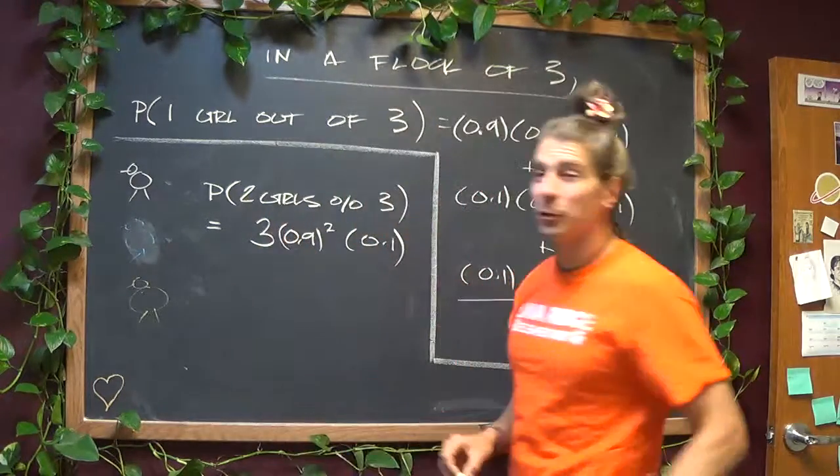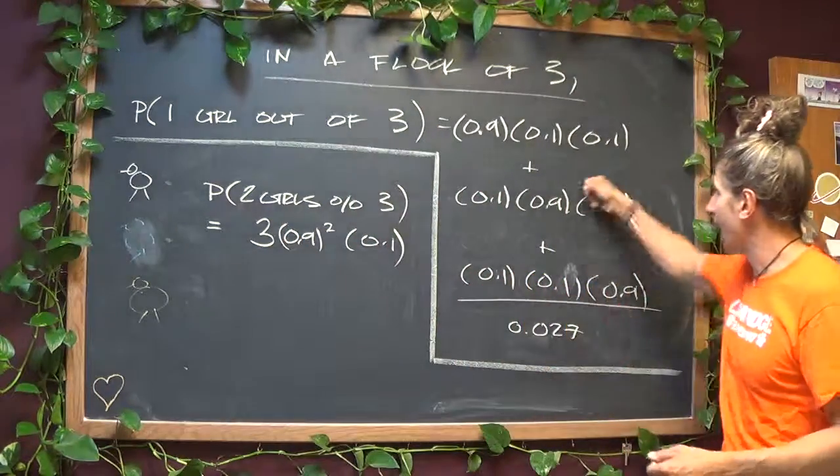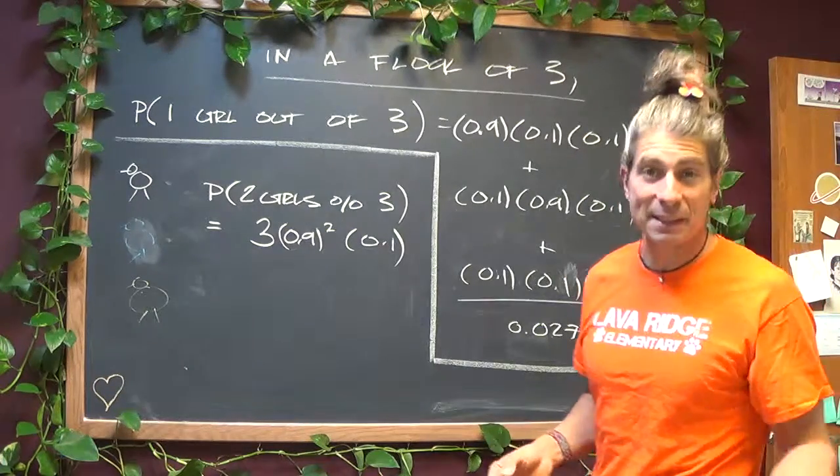So really, you can just stick a 3 multiplier in front, which is the same thing as adding three things up. Same exact thing, mathematically, it's a nice shortcut.